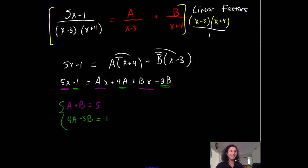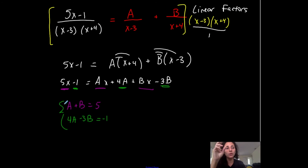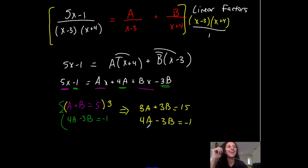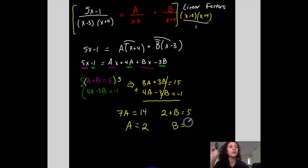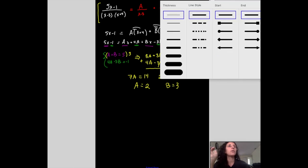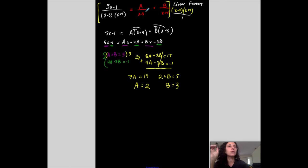I can use elimination or substitution — I'll use elimination. Multiplying equation 1 by 3 gives 3A plus 3B equals 15. Adding that to equation 2, the B's eliminate, giving 7A equals 14, so A equals 2. Substituting back: 2 plus B equals 5, so B equals 3. Now I know the partial fraction decomposition: 5x minus 1 over x minus 3 times x plus 4 equals 2 over x minus 3, plus 3 over x plus 4.